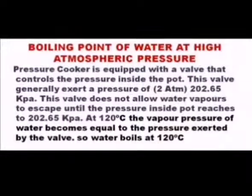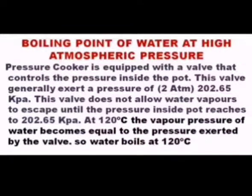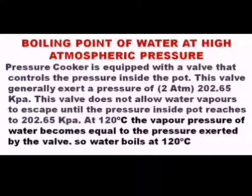Now, what happens when atmospheric pressure is higher? We use a common household apparatus — the pressure cooker. Pressure cookers are equipped with a valve that controls the pressure inside the pot. This valve generally exerts a pressure of 2 atm, which equals 202.65 kilopascals.